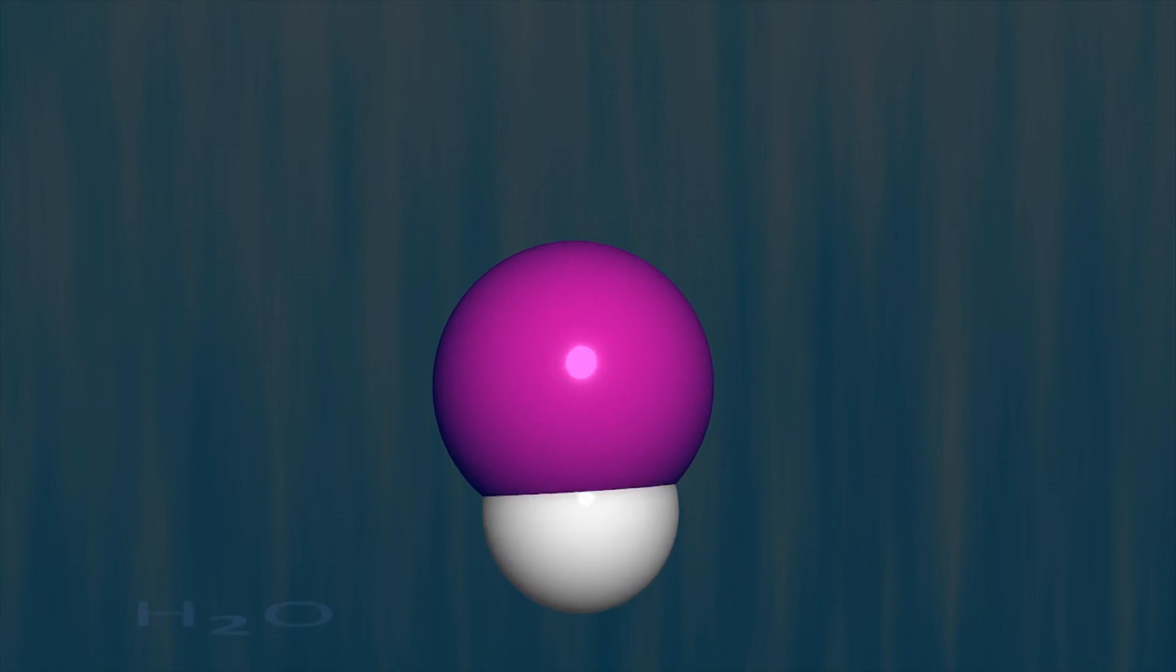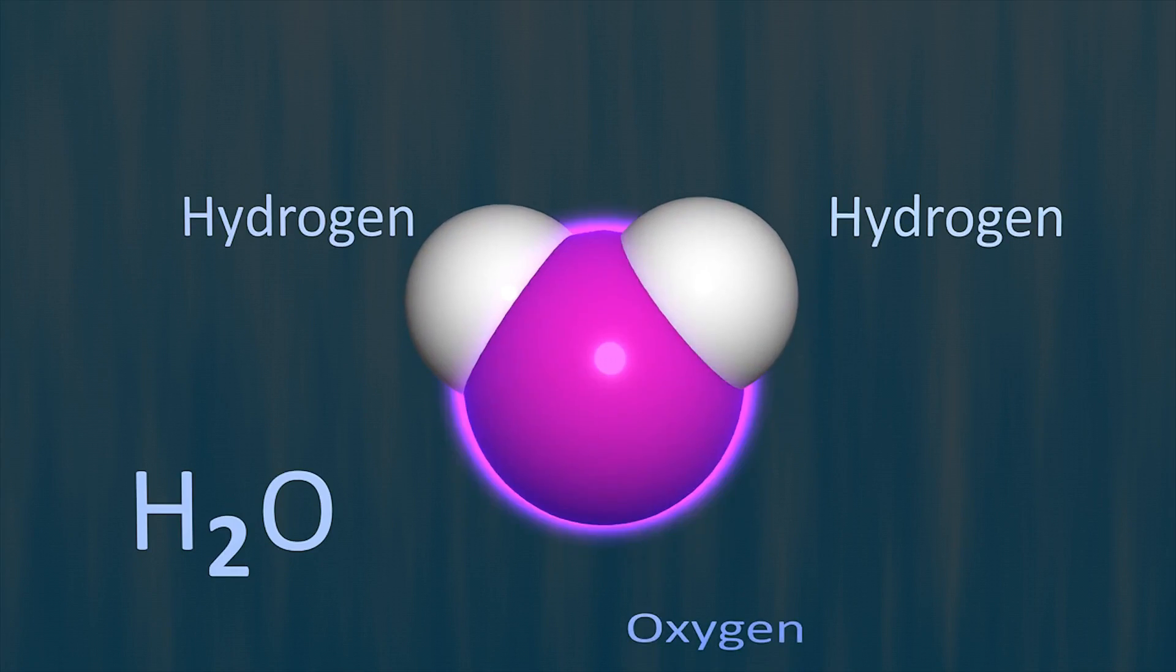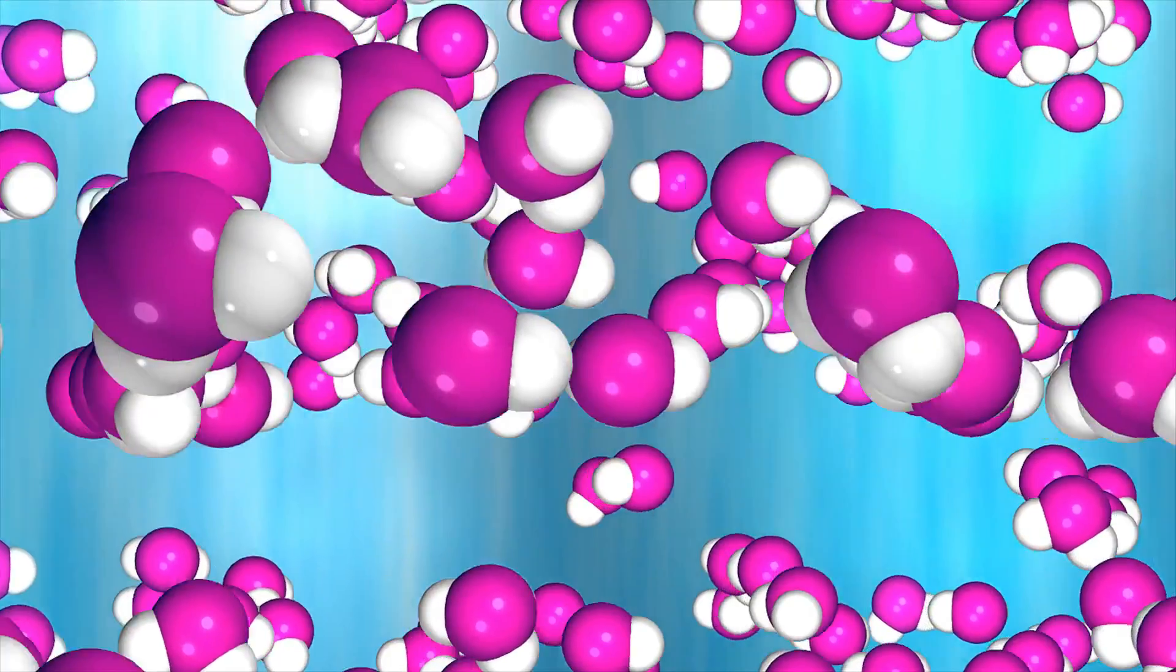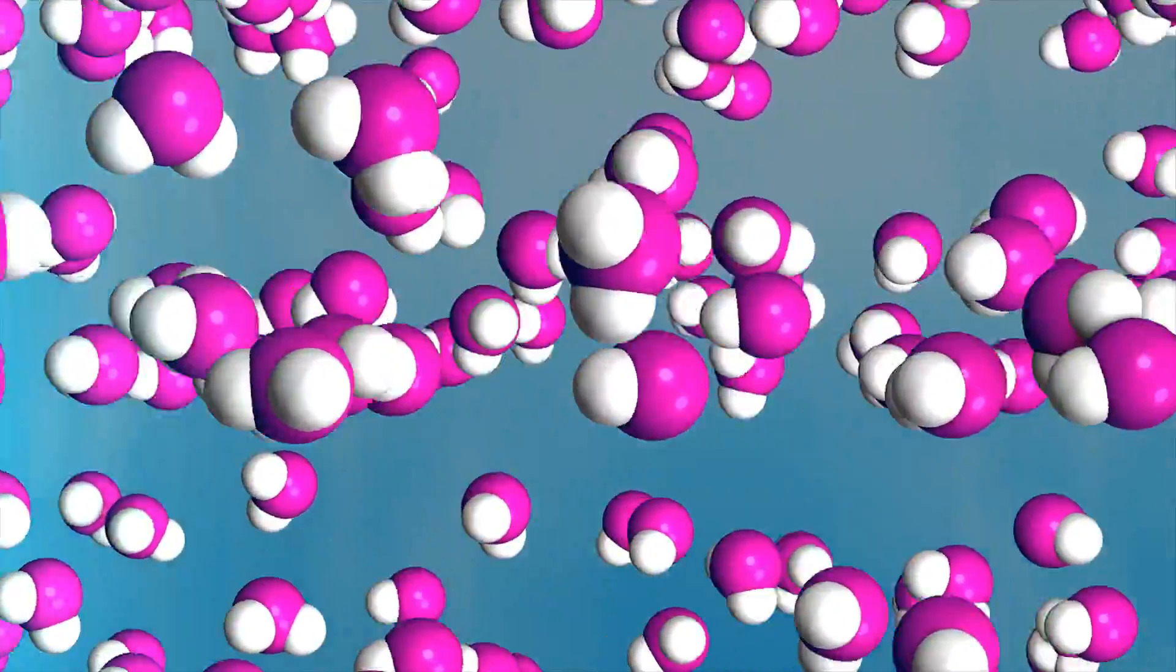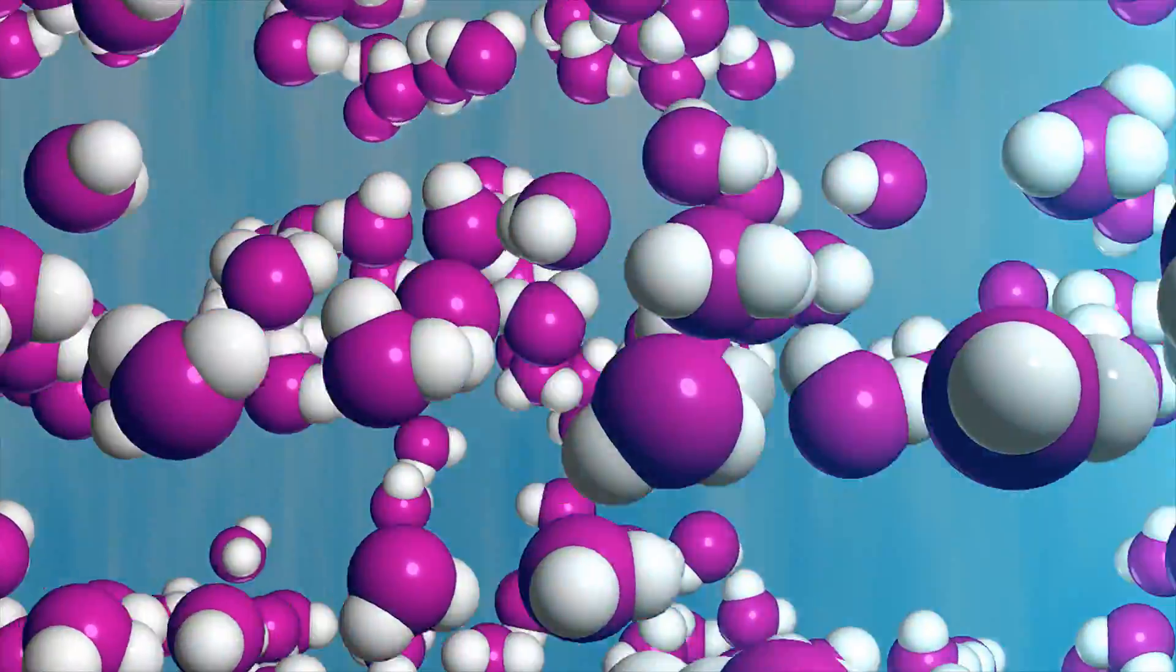However, hydrogen is not the only interstellar element that can form Rydberg baryonic dark matter. Oxygen, second only to hydrogen in abundance and chemical reactivity, readily combines with hydrogen to form water molecules.